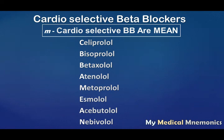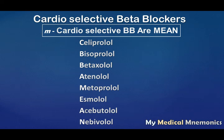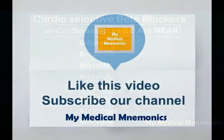'R' stands for atenolol. In 'MEAN', all four letters are used: M for metoprolol, E for esmolol, A for acebutolol, and N for nebivolol. In this way you can easily remember all eight cardio selective beta blockers — celiprolol, bisoprolol, betaxolol, atenolol, metoprolol, esmolol, acebutolol, and nebivolol — using the simple mnemonic 'Cardio Selective Beta Blockers ARE MEAN.'